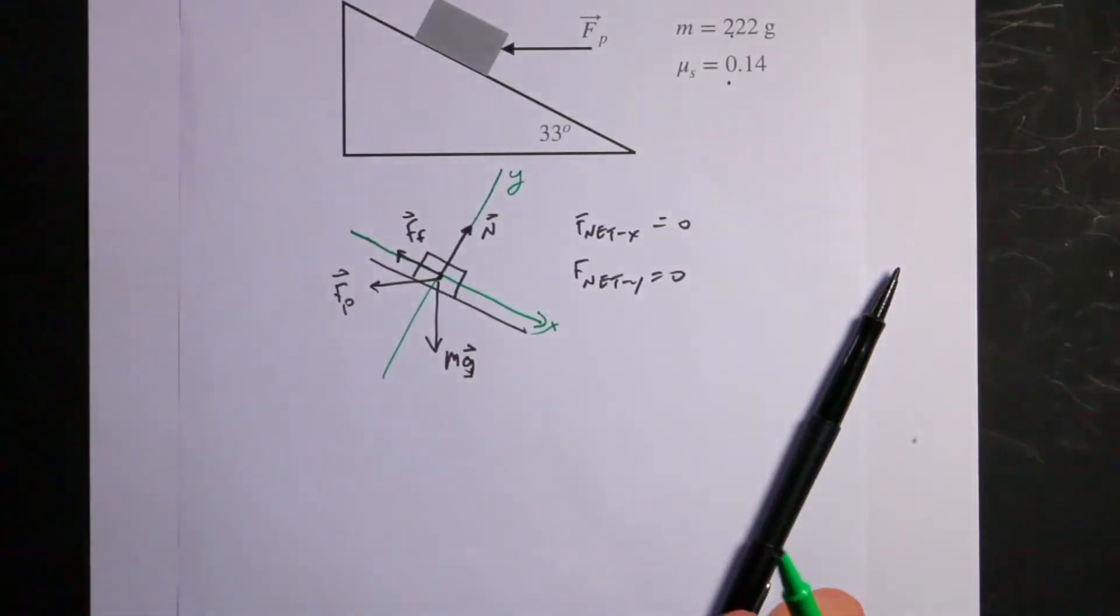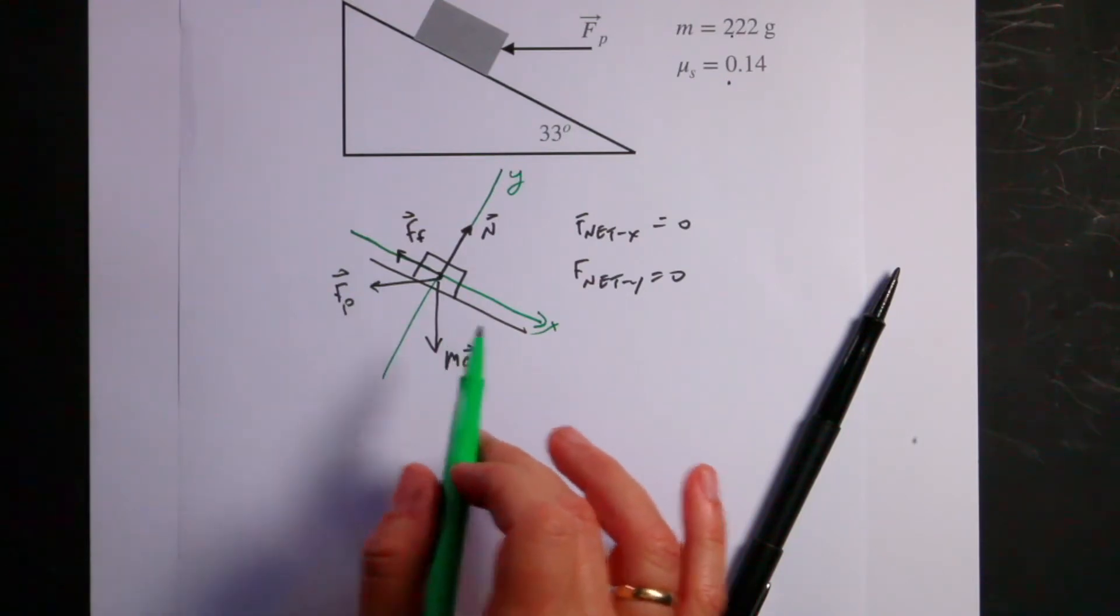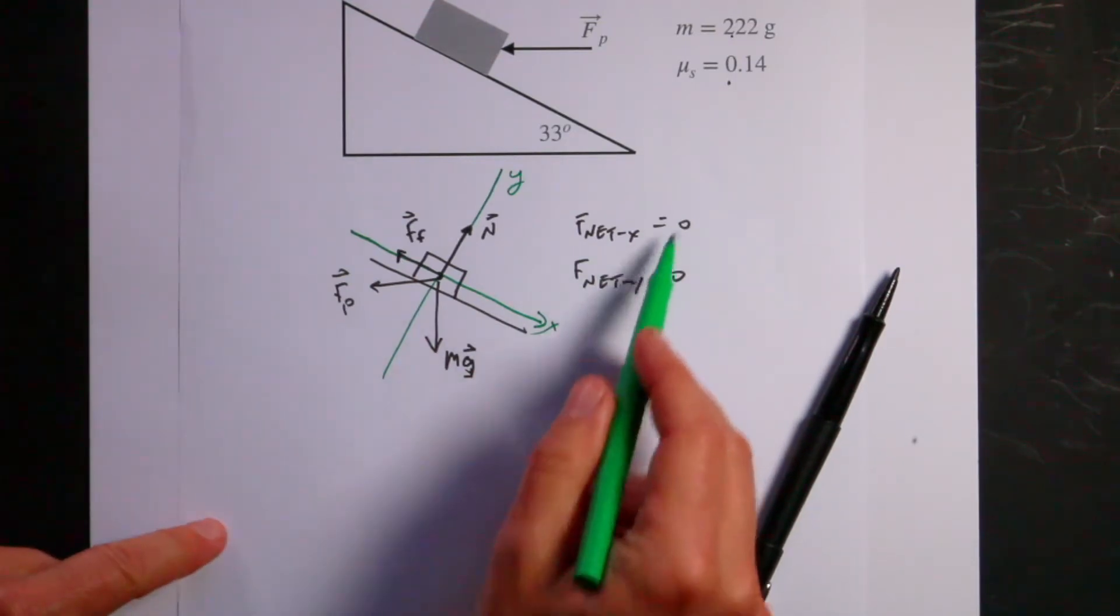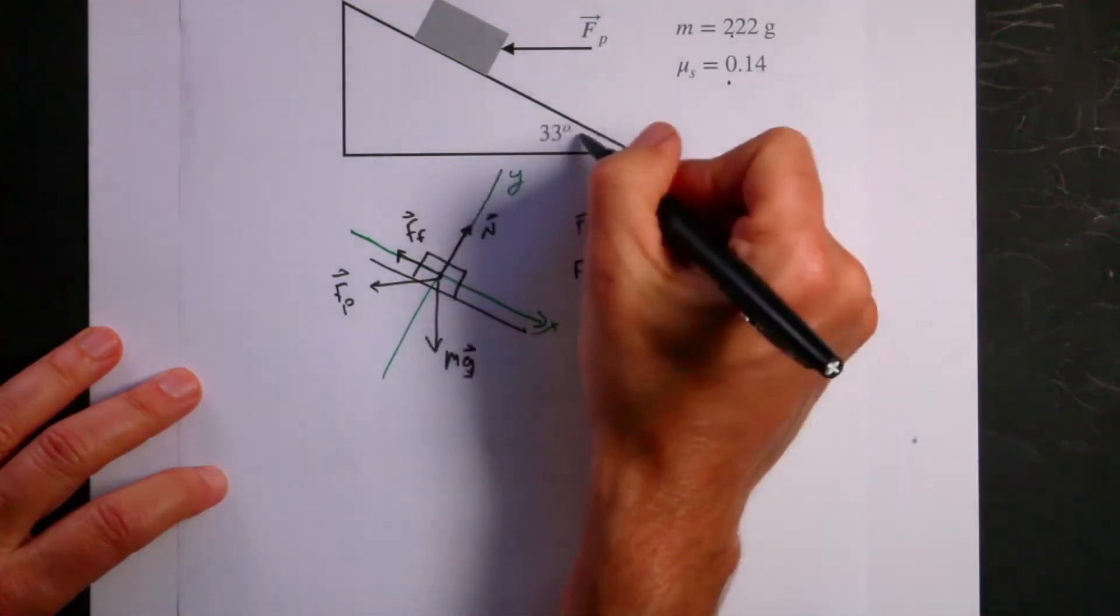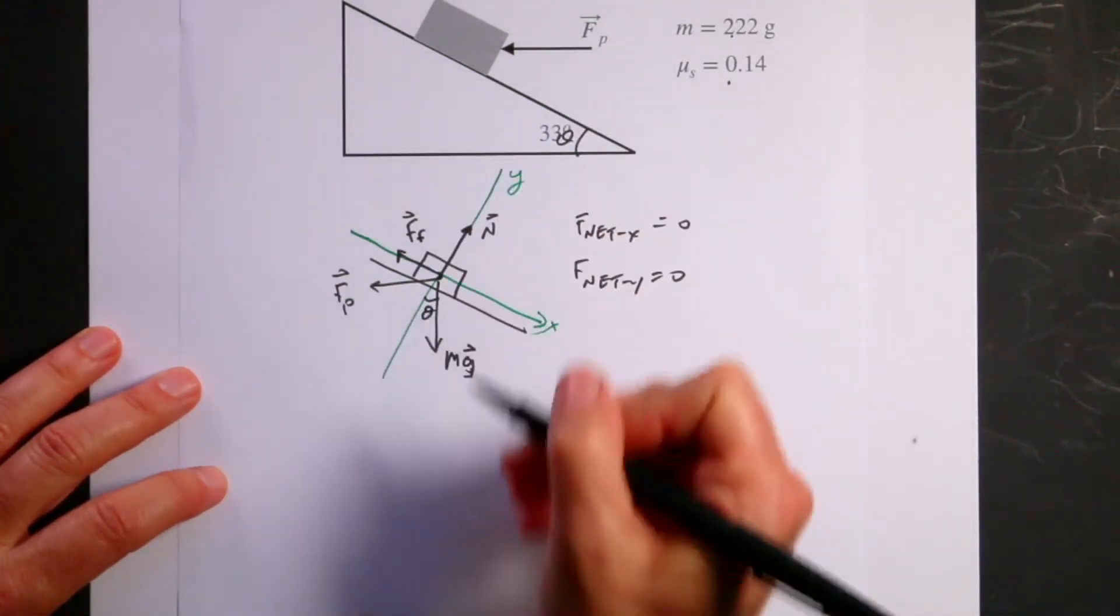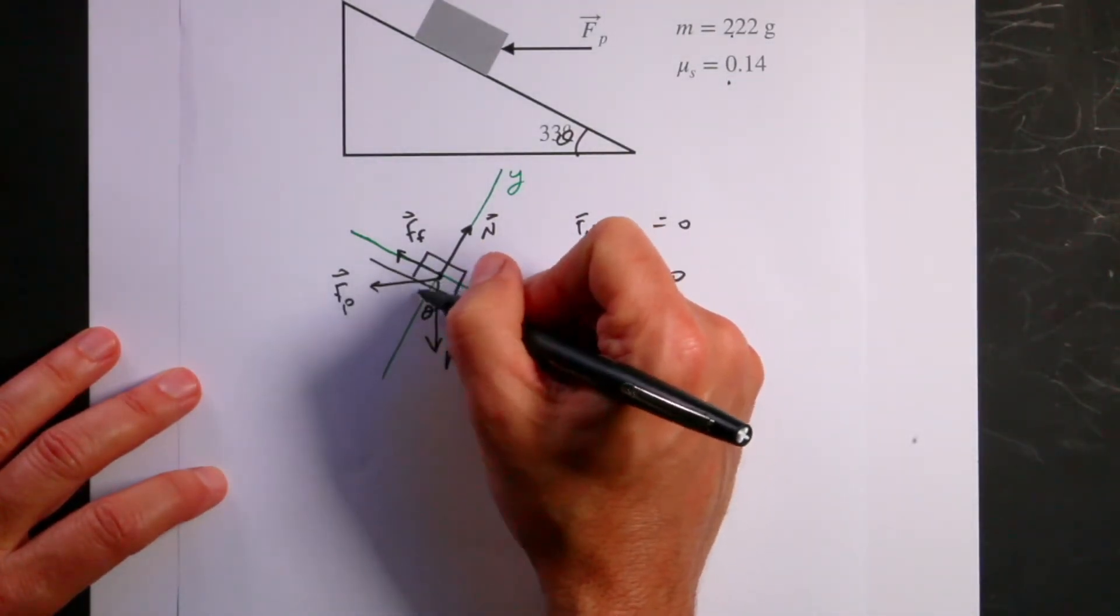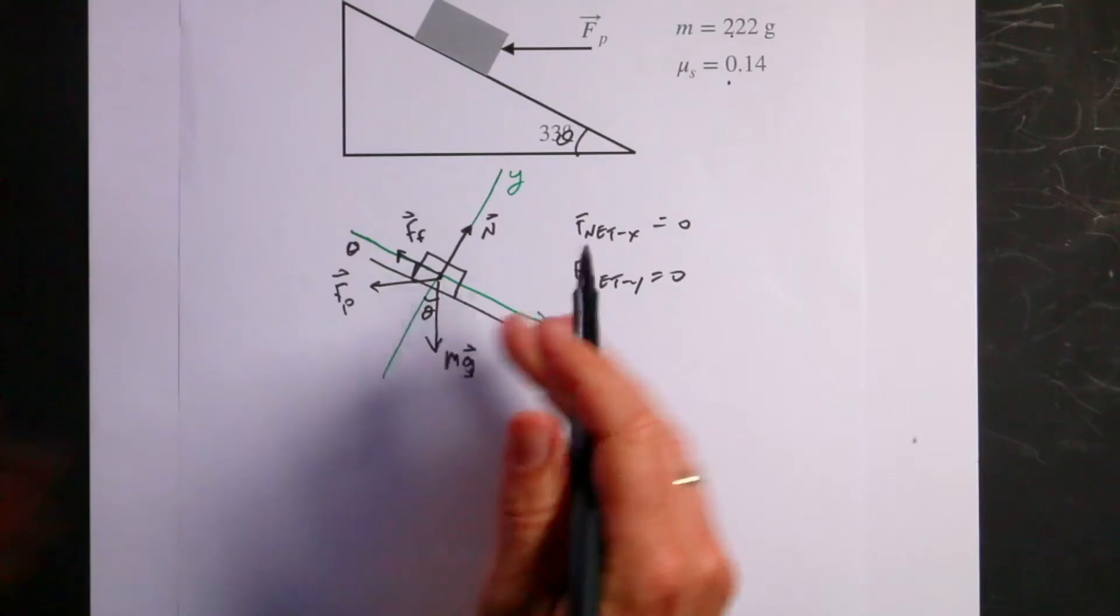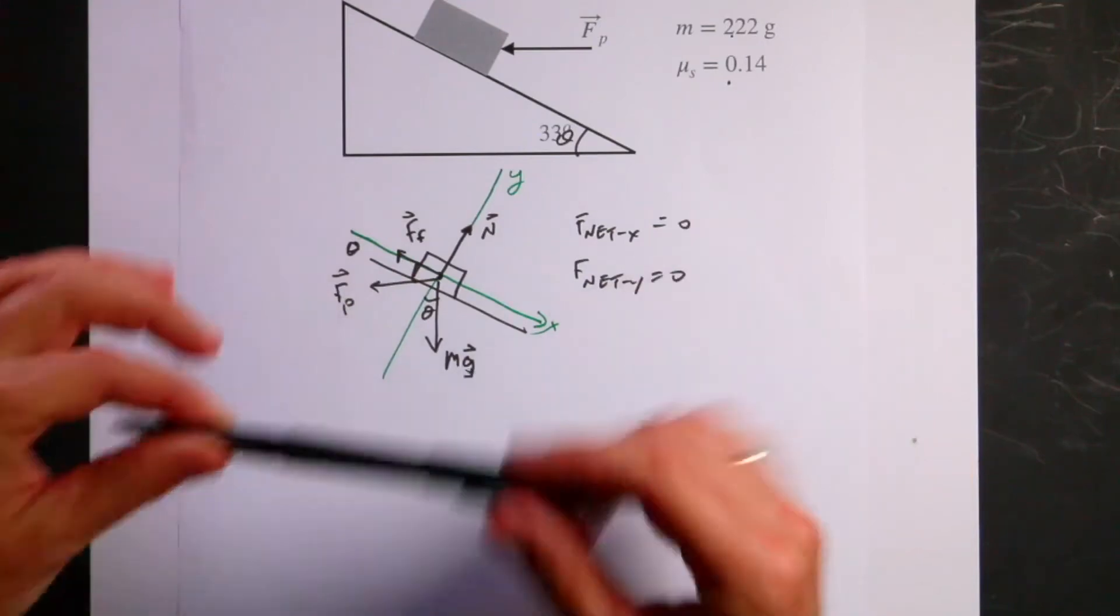The nice thing about that is that if this was accelerating, then the acceleration of the block would be in either the x or the y direction. Let's write down the forces that we have. If this is the angle theta, then this is the angle theta. And also this angle is theta. These are right angles, so that's also theta. Because imagine if this plane went all the way down to theta equals zero, then that angle would be zero, it would be in the horizontal direction.